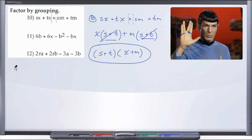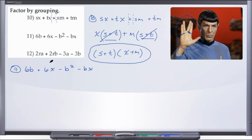That was number 10. Let's take a look at number 11 now. We have 6B plus 6X minus B squared minus BX. We have four terms, so we know we're going to be doing the Vulcan salute — we are factoring by grouping.